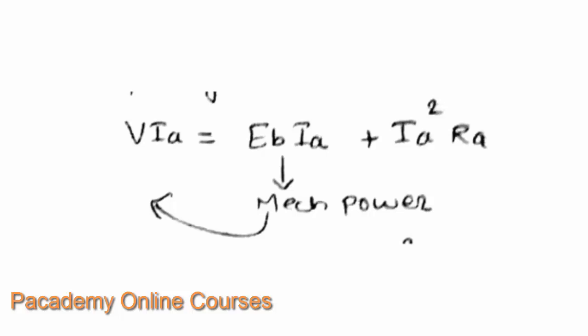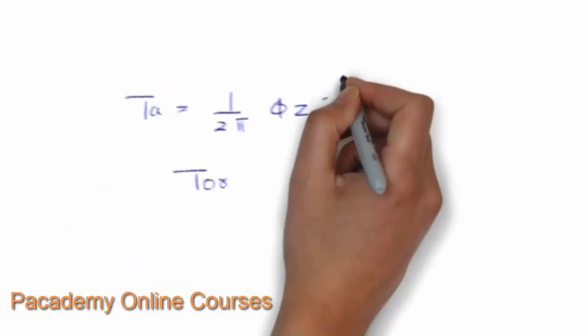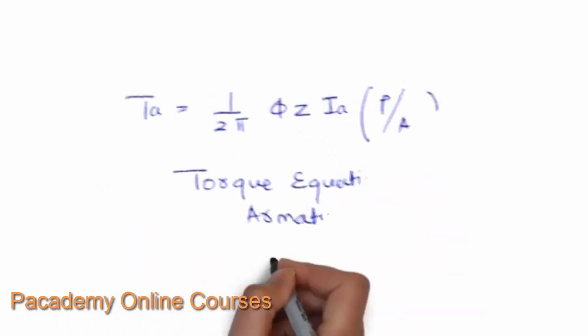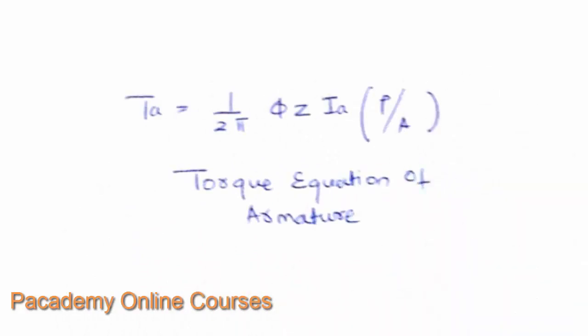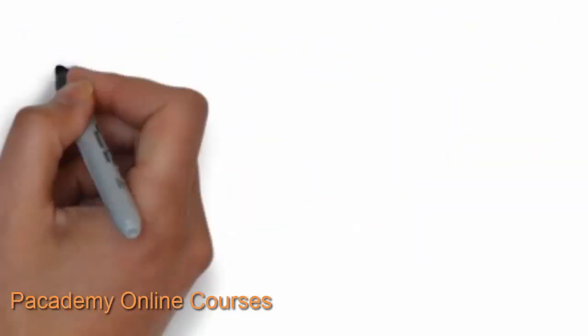The term E_B·I_A represents the mechanical power developed in the armature, written in electrical equivalent form. The torque equation of a DC electric motor is: T = (1/2π) × φZ × I_A × (P/A). The torque is directly proportional to the flux and the armature current.